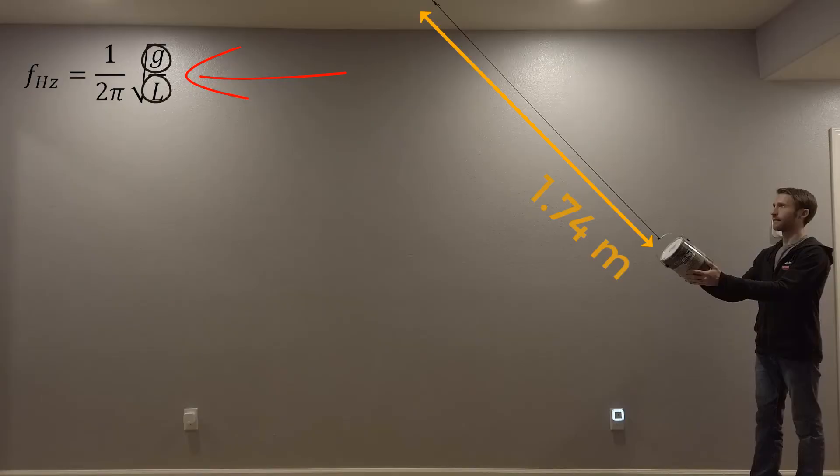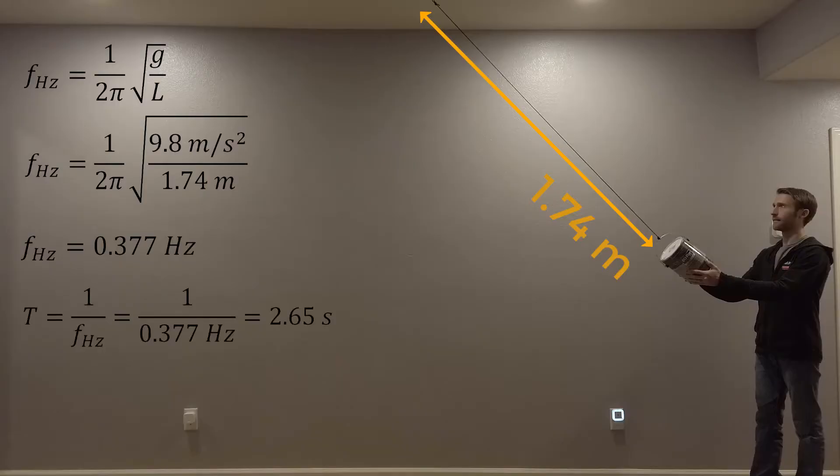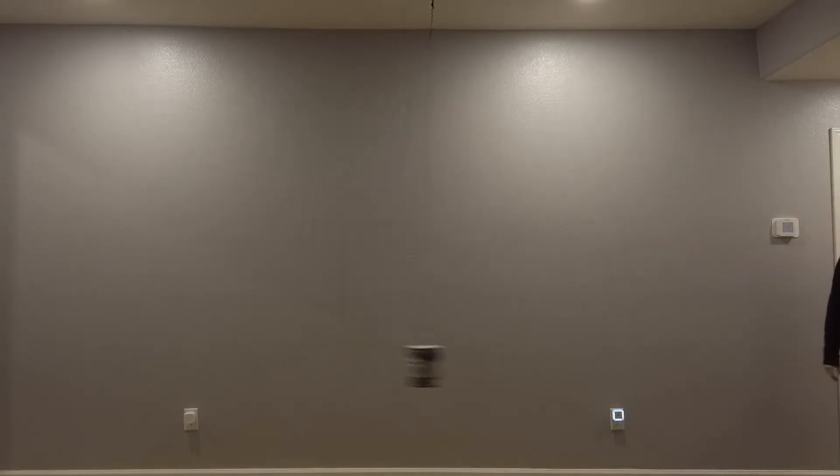The resonant frequency of a simple pendulum can be described by this equation. It is simply a function of the acceleration due to gravity and the length of the string between the mass and the pivot point. Filling in the known values we can solve for this system's natural frequency and then invert the frequency to find the resonant period. Physics says that this system will naturally oscillate with a period of 2.65 seconds. After letting the system reach a steady state let's start a timer and see if this is true.